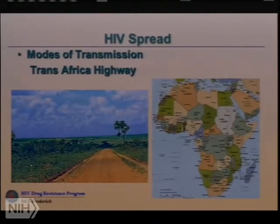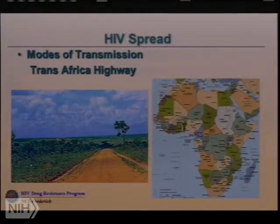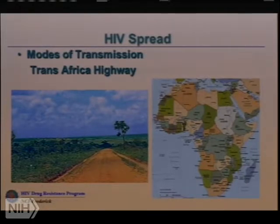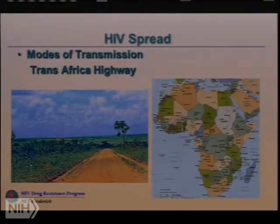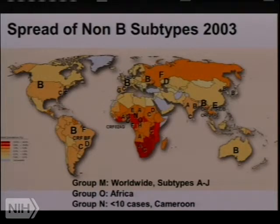Another form of spread was the Trans-Africa Highway — a route taken by truckers across the center of Africa, punctuated by roadside inns where people could transmit the virus to other humans. The virus probably diversified early in Africa and then spread to the rest of the world through a series of founder effects. Here in the United States, ninety-five percent of our viruses are subtype B, which probably came through some early founder effects.